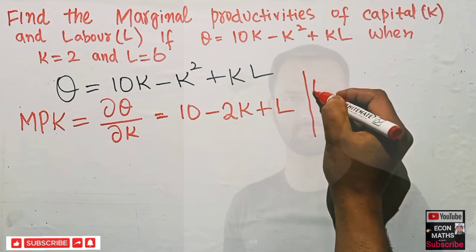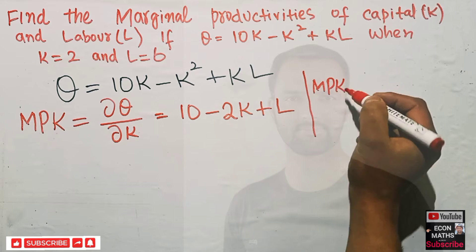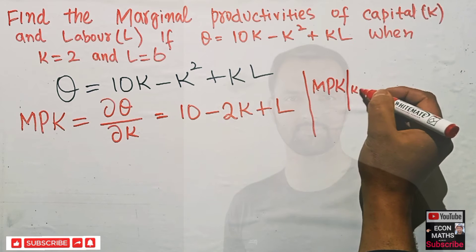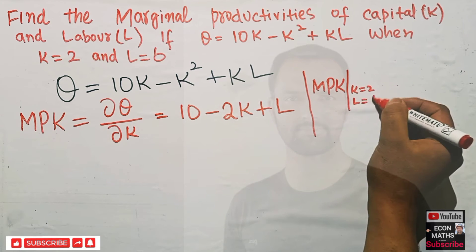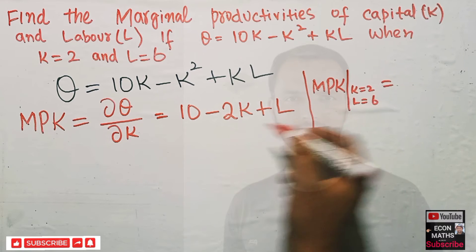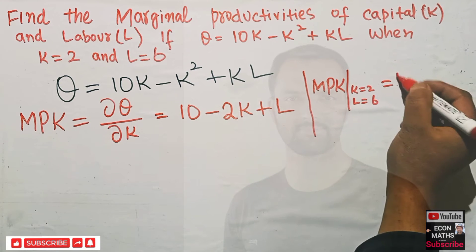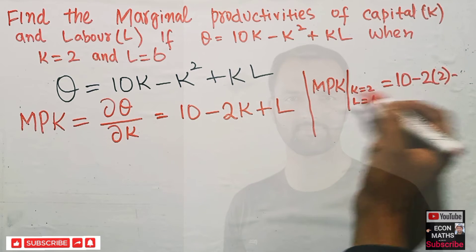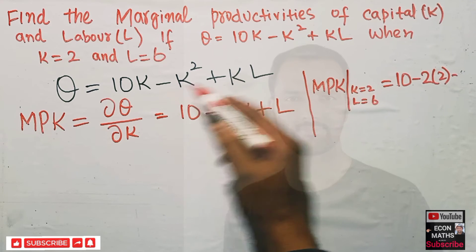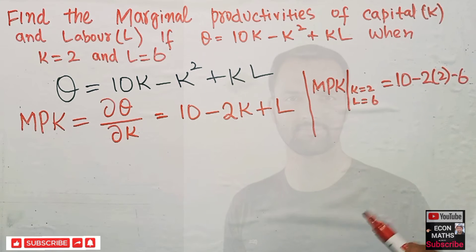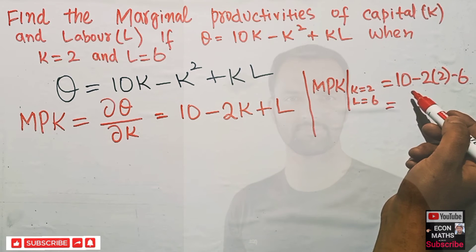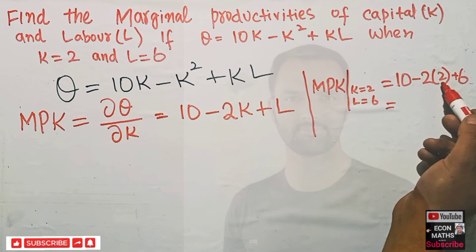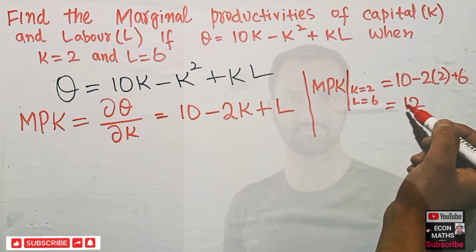Now, what is the marginal productivity of capital when K = 2 and L = 6? We plug in the values: 10 minus 2 times 2 plus 6, which gives us 10 minus 4 plus 6. So 10 plus 6 is 16, and 16 minus 4 is 12. We get MPK = 12.